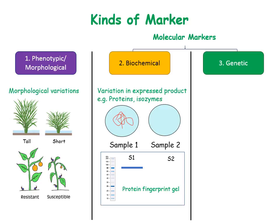However, the major limitations of phenotypic and biochemical markers are: first, they are influenced by environmental changes — that is, they are very unstable. Second, the number of characters or proteins are very limited, and thus the number of phenotypic or biochemical markers available is not many.